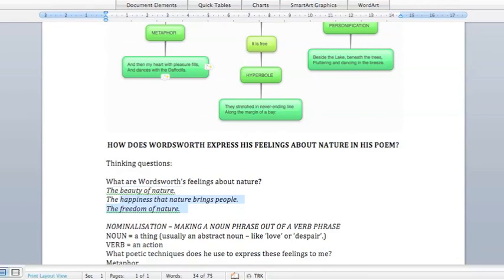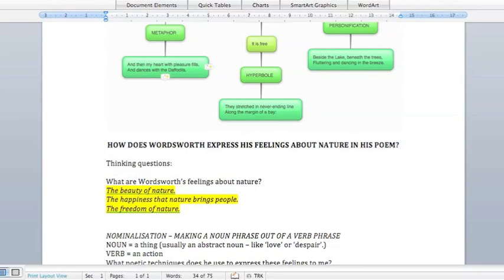So they are going to become the beginnings of my lines of argument. See how they're phrases, they're not complete sentences. The beauty of nature, that's not a complete sentence. So we have to work on that and build it into a full sentence. But those three things are going to be my lines of argument for this essay. And that's how you create your lines of argument.